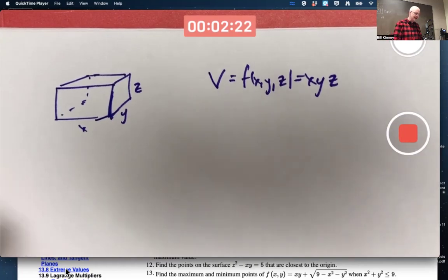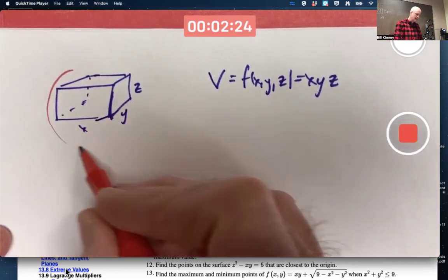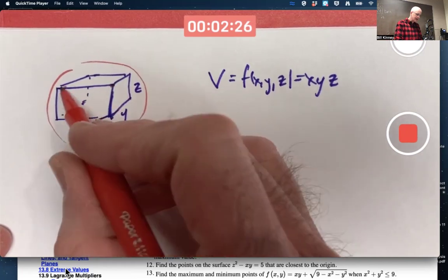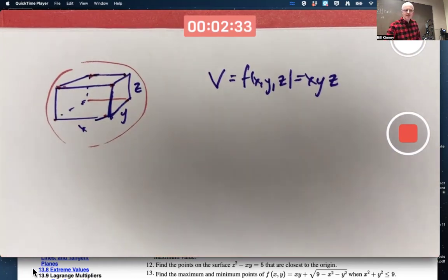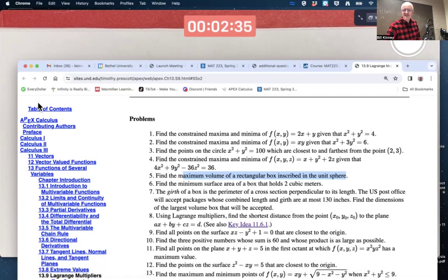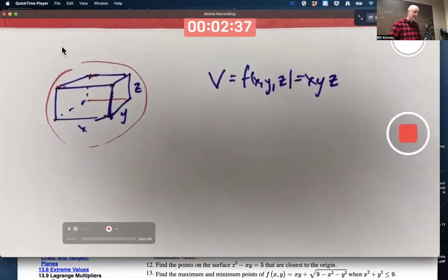It's inscribed inside the unit sphere. So the corners are touching the unit sphere. And do they say it's centered at the origin? I think that's the assumption, is that it's centered at the origin.